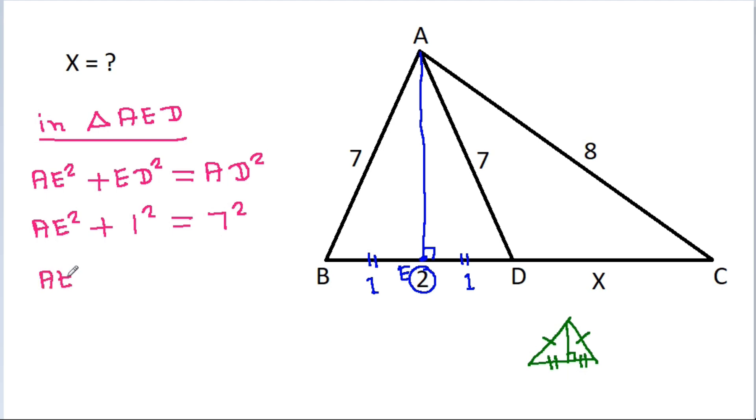And AE squared plus 1 is equal to 49. So, AE squared will be 48.